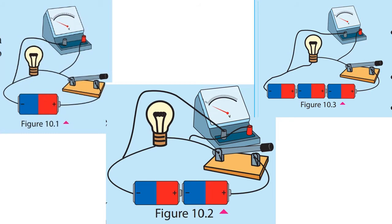Look at the first figure very carefully. First, connect one dry cell with the bulb and the switch as shown in the first figure. Connect the voltmeter to measure the voltage across the bulb. In the second figure, you have to connect two dry cells with another bulb and the switch as shown in the figure.